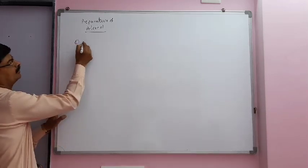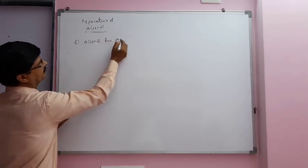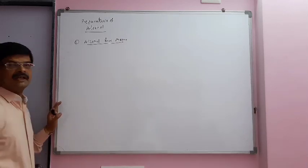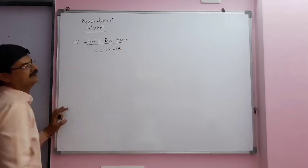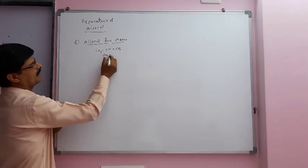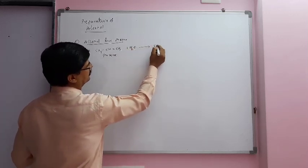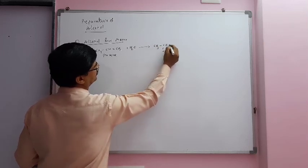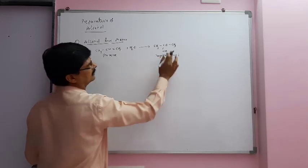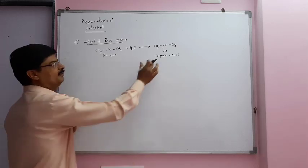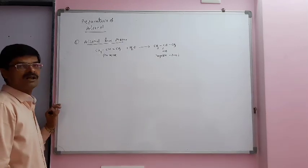First we will study alcohol from alkene. Taking the example of CH3-CH=CH2, that is propene. Propene plus water gives CH3-CH(OH)-CH3, that is propan-2-ol. The product is according to Markovnikov's rule.